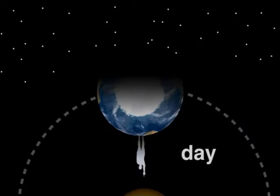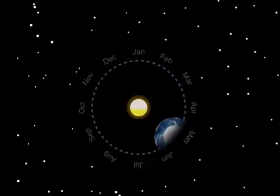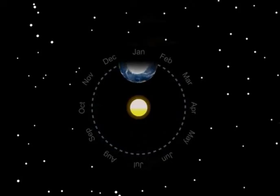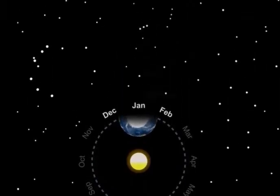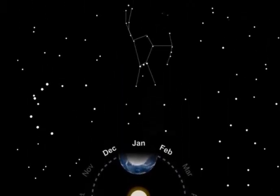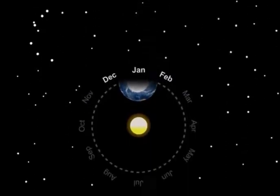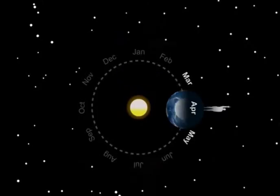Are you starting to understand it yet? Think about it. The reason you only see Orion in the winter months is because the stars of Orion are actually located over here, in this direction of space. That's where the nighttime side of the Earth is facing during the winter months. Then the reason Orion disappears by springtime is because now the Earth has come to this part of its orbit. When you look out into the night sky in spring, you're looking off into a new direction of the universe. You can't see Orion anymore.